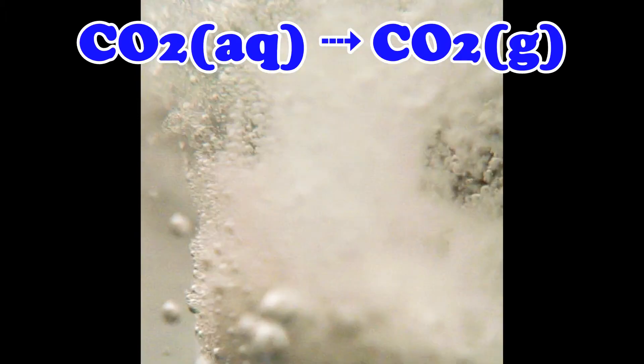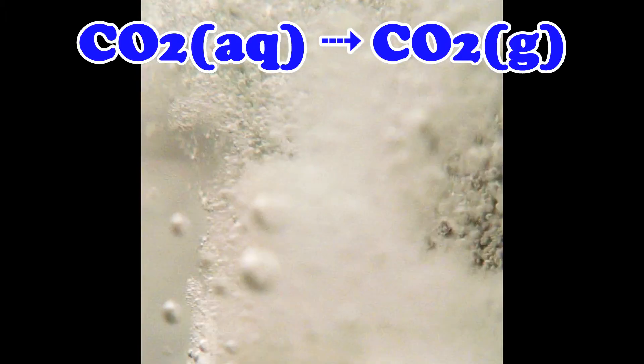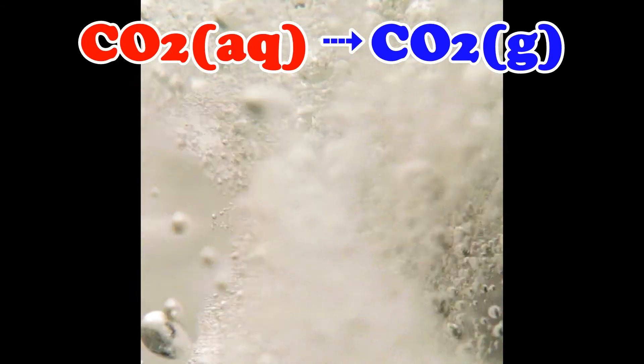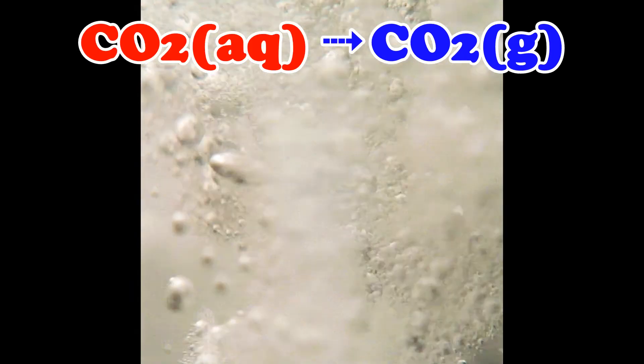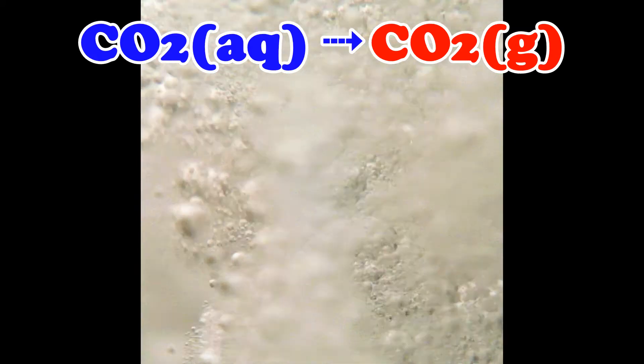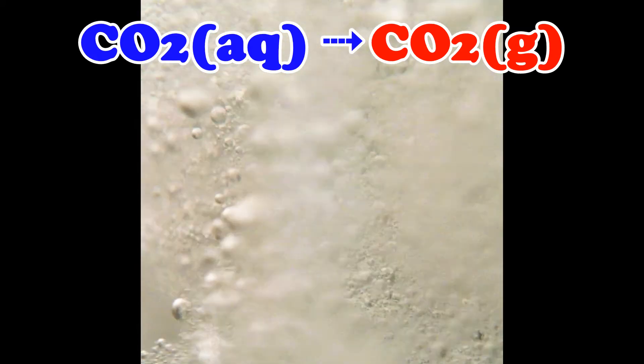This process of CO2 escaping the soda as a gas can be represented with the equation you see here. The formula on the left of the arrow represents dissolved carbon dioxide, while the formula on the right represents carbon dioxide gas. Because no new chemical compounds are created during the process, we say the fountain is not caused by a chemical process, but rather by a physical one.